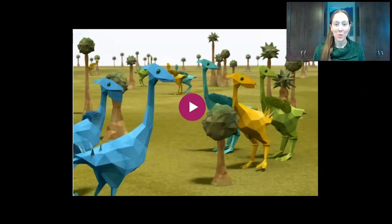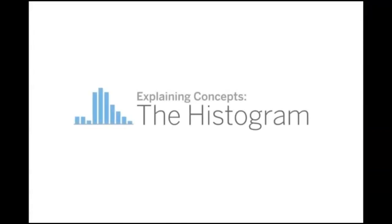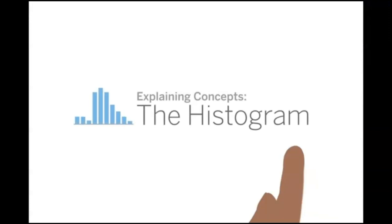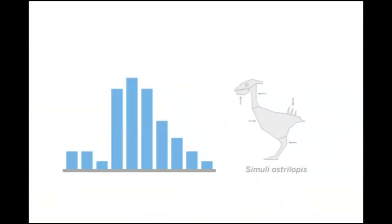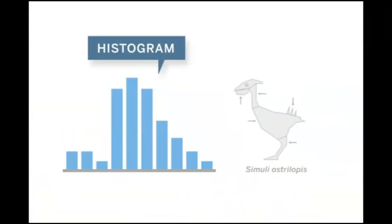As you watch the video, listen for why we use histograms and what they show us about variation. Biologists use graphs called histograms to show variation in populations of organisms.